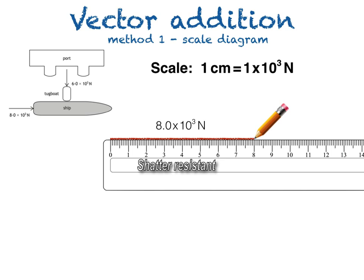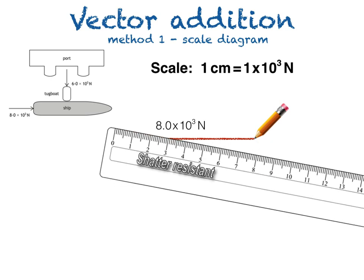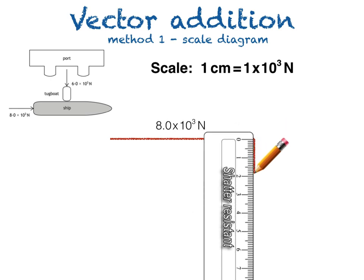So we draw our next line, the one representing the downward force of 6.0 × 10³ N, at the end of our first line, like this. Using our scale again, this line should be 6 cm long.